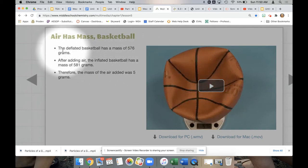It tells us on the left here that the deflated basketball has a mass of 576 grams. That means that the basketball all by itself, without anything inside of it, has this mass.